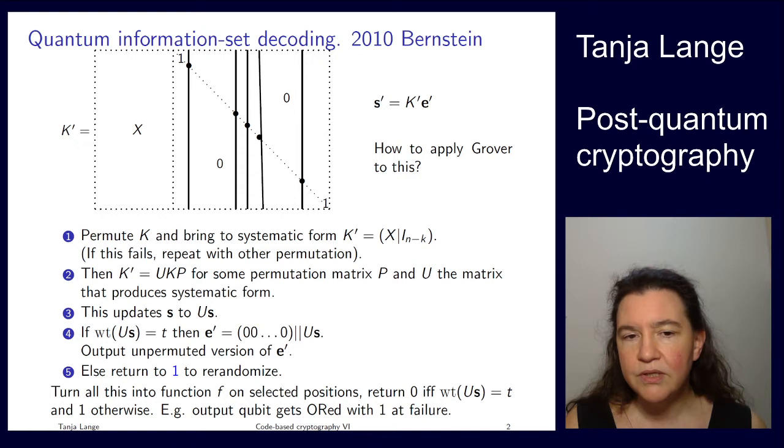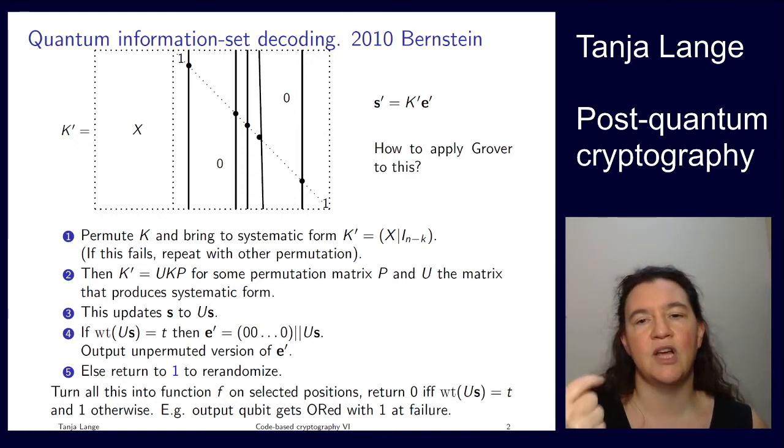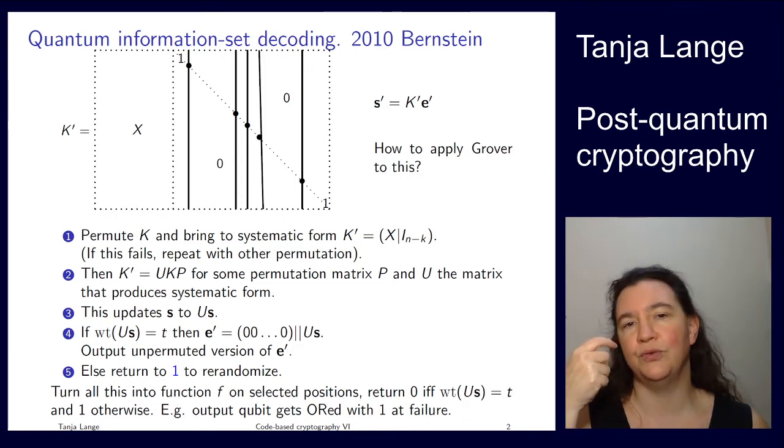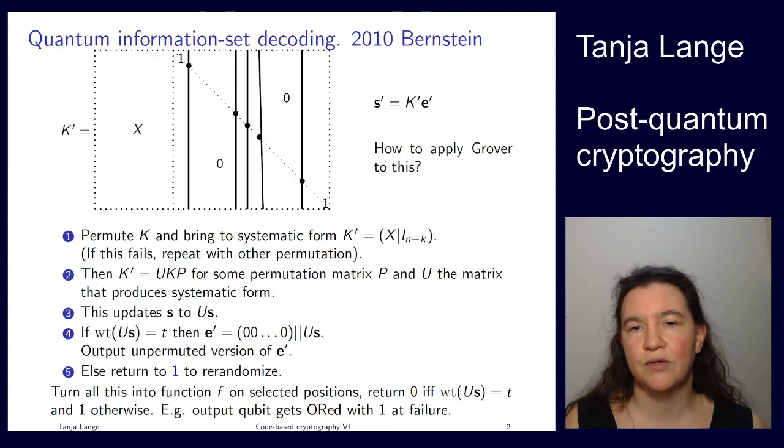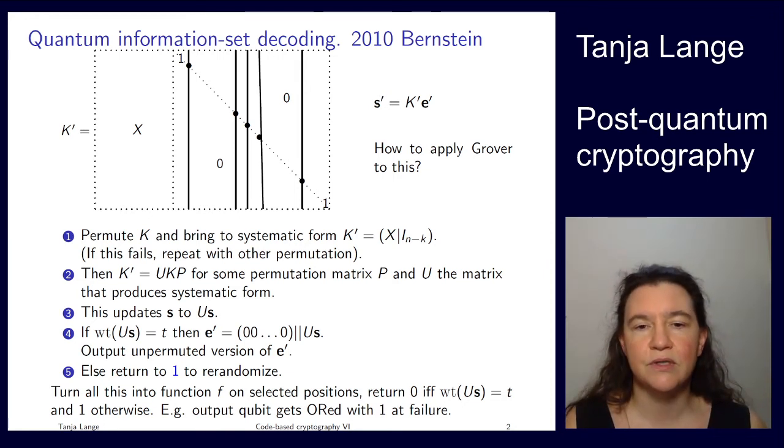And in order to compute this, you have this one output bit. And for instance, you could say that each time you fail, whether you fail for doing identity matrix, so if you can't actually bring this with Gaussian elimination to an identity matrix, then you OR a one into there. Or if you got past this, and then in the next step you don't get the right weight, you also OR a one into there. OR has a nice feature that if there was a zero or a one before, when you OR a one into it, it stays at one.